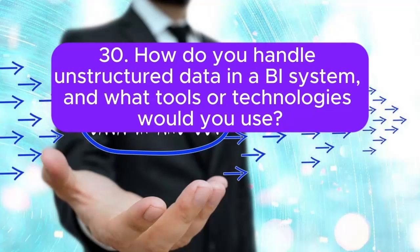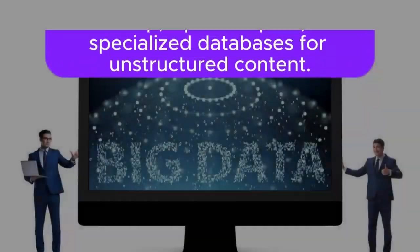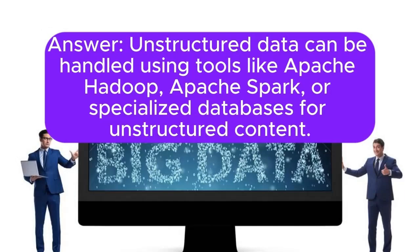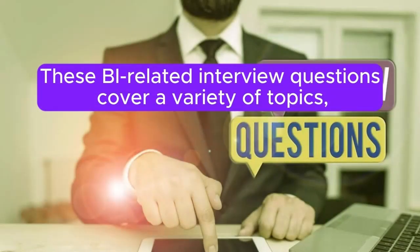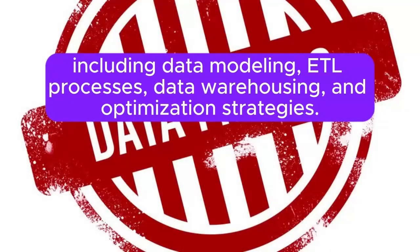Question 30: How do you handle unstructured data in a BI system, and what tools or technologies would you use? Answer: Unstructured data can be handled using tools like Apache Hadoop, Apache Spark, or specialized databases for unstructured content. ETL processes may involve data transformation to extract insights from unstructured sources. These BI-related interview questions cover topics including data modeling, ETL processes, data warehousing, and optimization strategies.